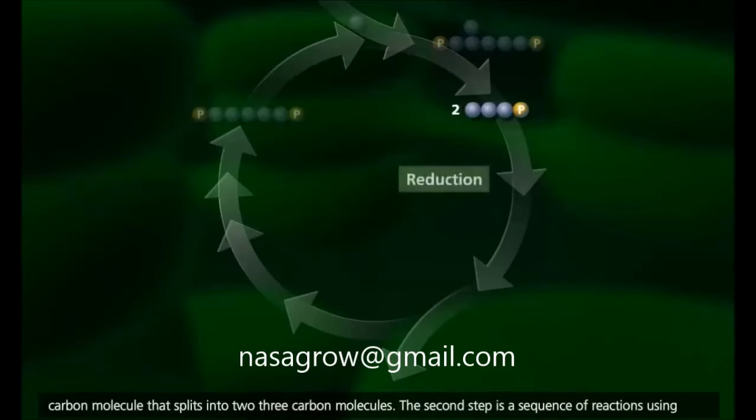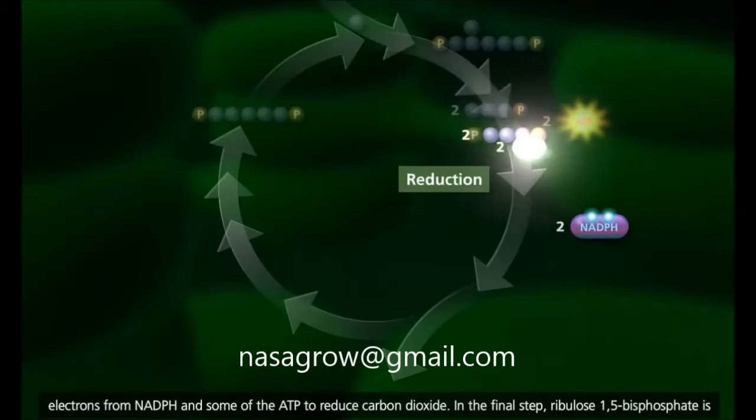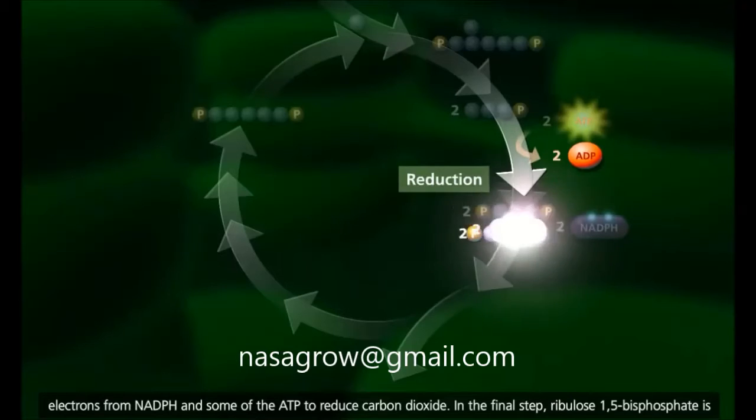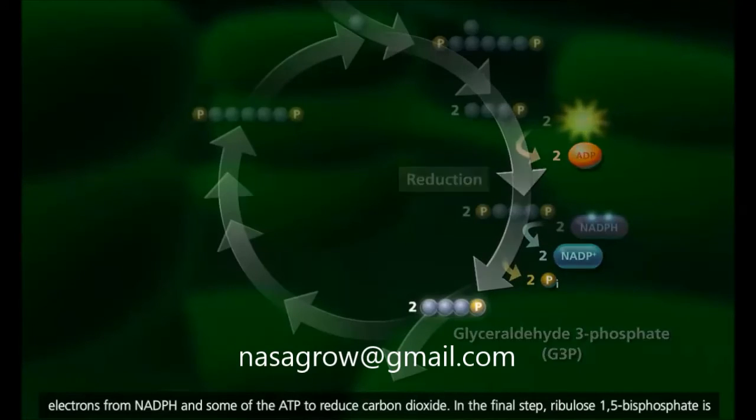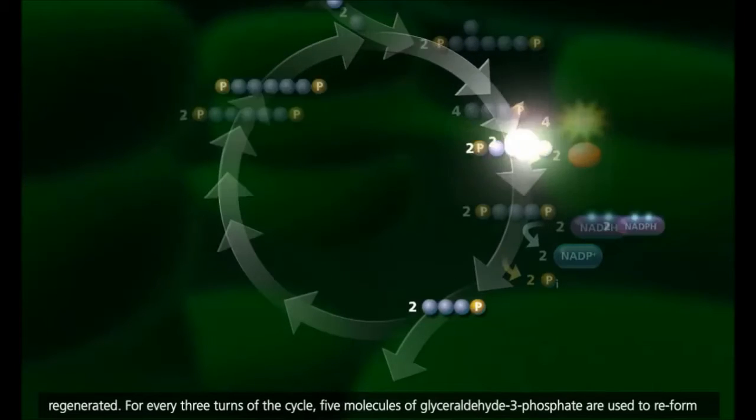The second step is a sequence of reactions using electrons from NADPH and some of the ATP to reduce carbon dioxide. In the final step, ribulose 1,5-bisphosphate is regenerated.